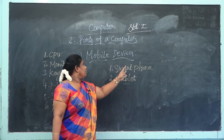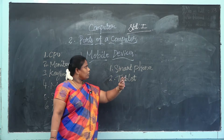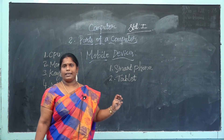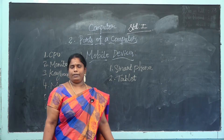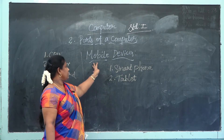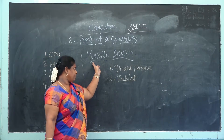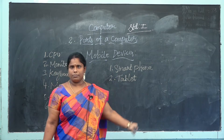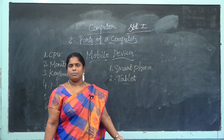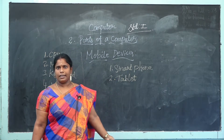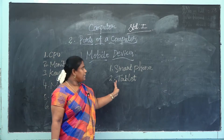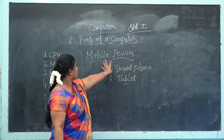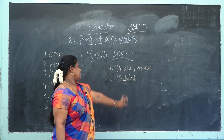Smartphone is called 'smart' — why? Because it is like a computer. Mobile devices' main usage is to talk to your families and friends, send messages and get messages, and so on. There are a lot of facilities in mobile devices.